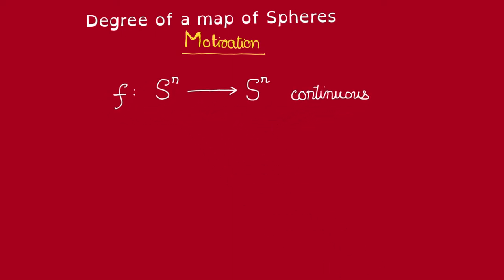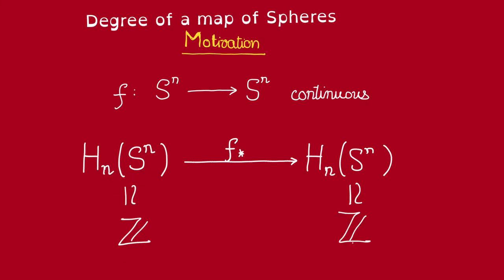This definition certainly generalizes for the case of any general continuous map from the sphere to itself. Because in such case, such maps always induce a map on homology. And we know that these homologies are isomorphic to ℤ.